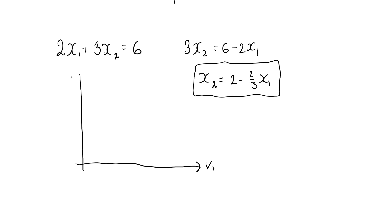Put x1 here, x2 here. I see that this is a linear function with an intercept of 2, so I put 2 here. The slope is minus 2 thirds. So when x1 is 3, x2 will be precisely 0. So it'll be a straight line like this with a slope of minus 2 thirds.